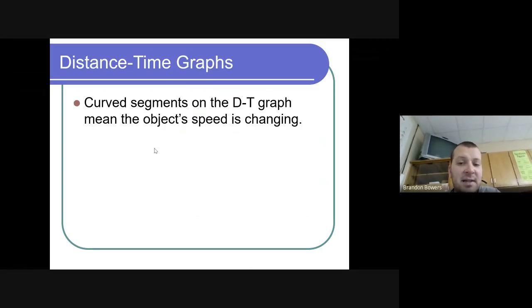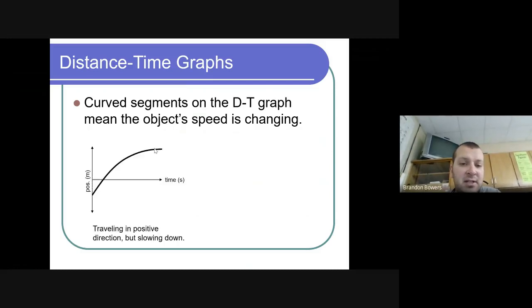Curve segments on distance-time graphs mean the object speed is changing. Now if we look at this, he was traveling at a constant speed until about here, then started to curve going back. He's still traveling up, however he's not traveling up as fast. He's slowing down, going up, up, up, slowing, slowing, and maybe eventually he might be going down.